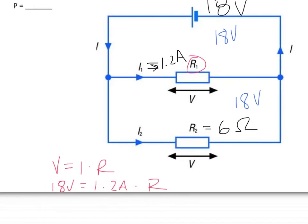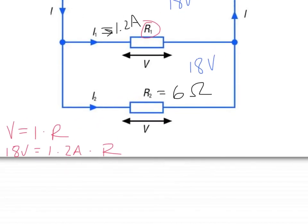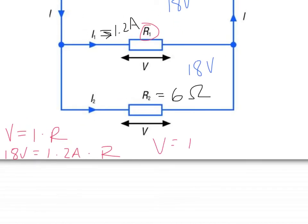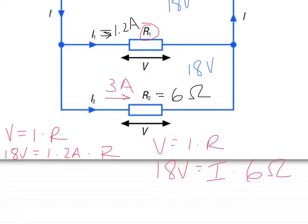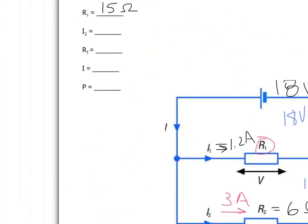Going back to the circuit, the current through resistor 2 can be solved similarly using Ohm's law. The voltage remains 18 volts, the current is unknown, and the resistance is the given 6 ohms. So the current through R2 is 18 divided by 6, which is 3 amps.